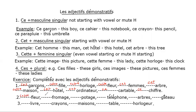'Fleur' is feminine singular, so the answer is 'cette'. 'Cromate' is masculine singular, so 'cet'. 'Potage' is also masculine singular, so the answer is 'cet'. 'Arbres' is plural, so 'ces'. 'Gâteau' is masculine singular, so 'cet'. 'Livre' is masculine singular, so 'cet'. The next is masculine plural, so 'ces'. 'Maisons' is plural feminine, so 'ces'. 'Table' is feminine singular, so 'cette'. 'Horloge' is masculine singular starting with mute H, so it will be 'cet'. Thank you.